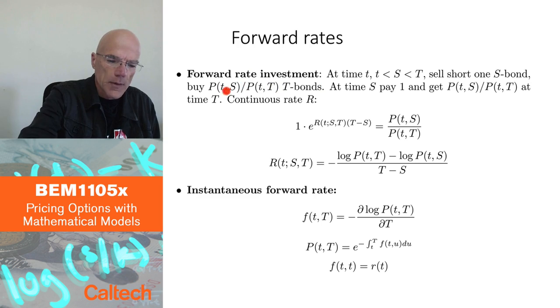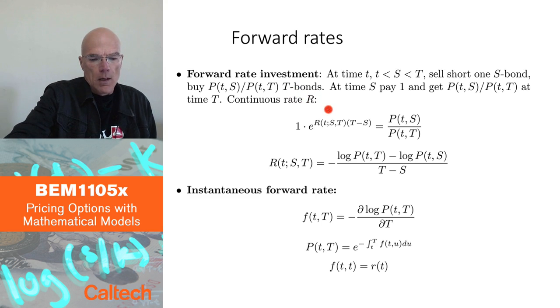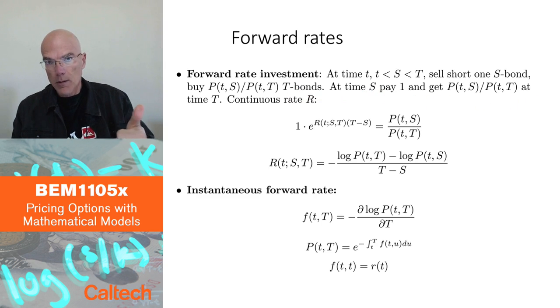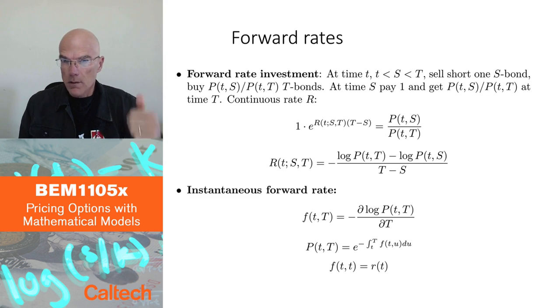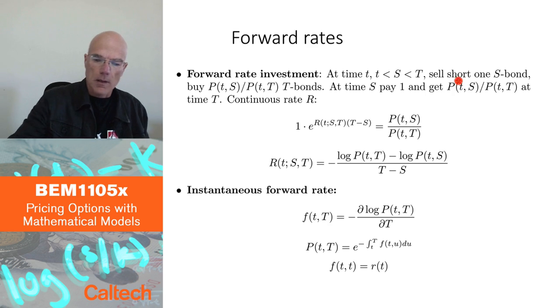Right? If you get $2 at this one, and this one costs $1, we can buy two of those. And then at time S, since we are short the S bond, we have to pay $1 to deliver the bond payoff. And finally, at time capital T, since we have P(t,S) over P(t,T) T bonds, we get that many dollars at time capital T. So this is exactly the way that there is zero investment today at small t, there is investment of $1 at time S, and then you get something at time T, this ratio.